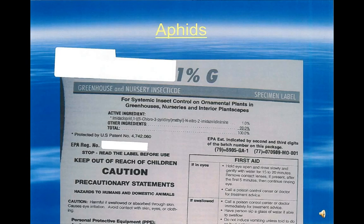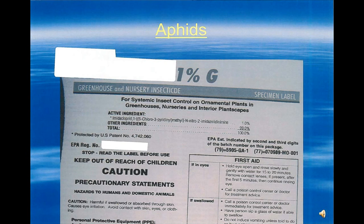If aphids are the pests you are concerned with, there are multiple active ingredients which will control this pest. This particular active ingredient is on the Nevada list and meets all the criteria established by Nevada. Keep in mind that this active ingredient appears in yellow on the Nevada list because it is a systemic product which will be absorbed by the plant and residue will remain in the plant tissue for a long period of time, especially in an indoor setting. Therefore, always use the lowest application rate specified on the pesticide label and use the product early in the growth cycle.